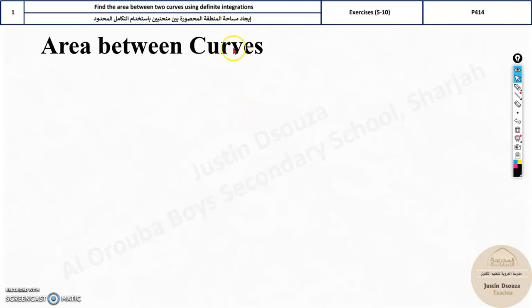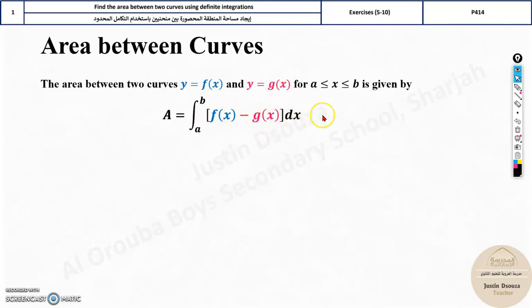Before we go to the problem, let's see the formula which will be used. Area between two curves, let one curve be y equals f of x and another curve g of x. These are the limits a to b. You need to use this formula from a to b, the lower limit to the upper limit. The function f of x minus the other function g of x dx.